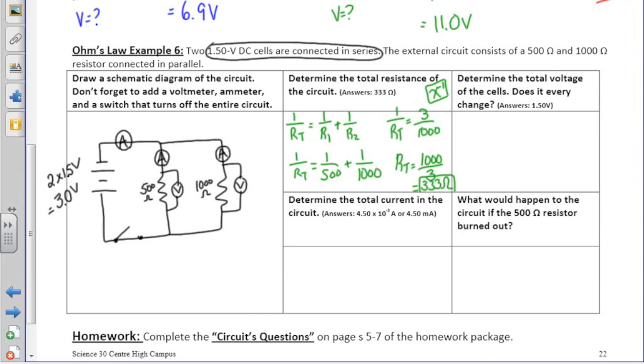The next question then asks us to determine the total voltage of the cells, and does it ever change? There's actually a typo in your workbooks. The total voltage should be the two cells added together, which is 3.0 volts. And because this is a parallel circuit, the voltage stays the same through each branch of the circuit.